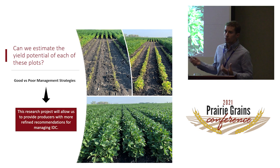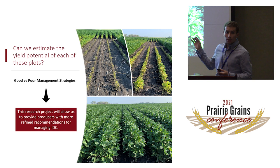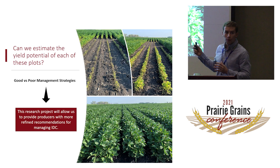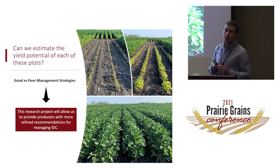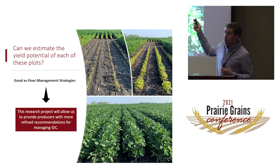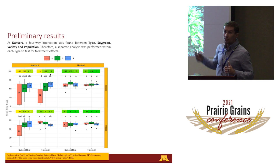This slide shows a contrast between poor versus better management strategies. These plots were placed right next to each other in a hotspot area. Even in a hotspot area, we can still have soybeans that look great if the right management strategies are adopted. The plot at the bottom produces almost 90 bushels per acre. The plot on the top right, around 12 bushels per acre. The one on the left, almost zero.